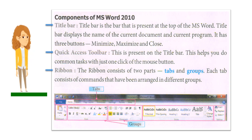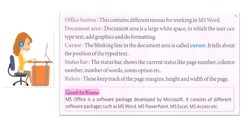Ribbon: The Ribbon consists of two parts — tabs and groups. Each tab consists of commands that have been arranged in different groups. Office Button: This contains different menus for working in MS Word. Document Area: The Document Area is a large white space in which the user can type text, add graphics and do formatting. Cursor: The blinking line in the document area is called the cursor. It tells about the position of the typed text.